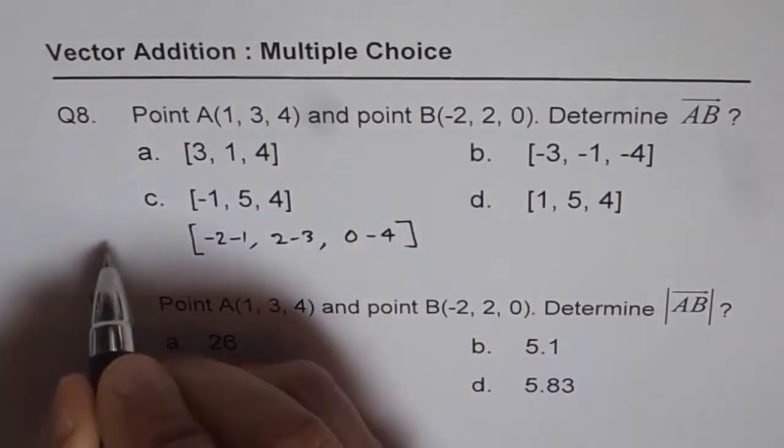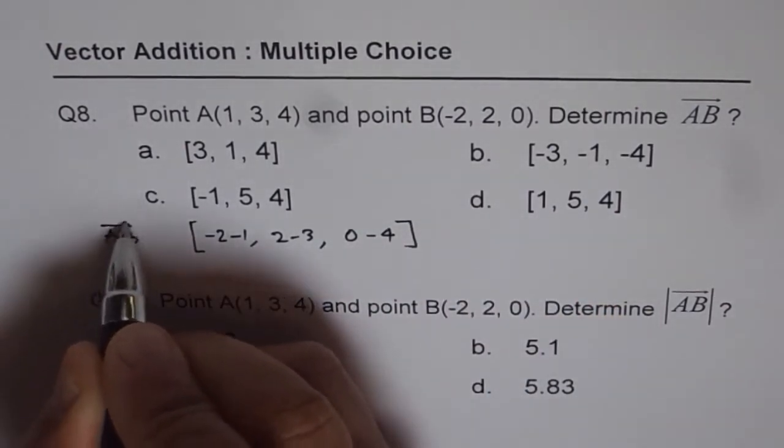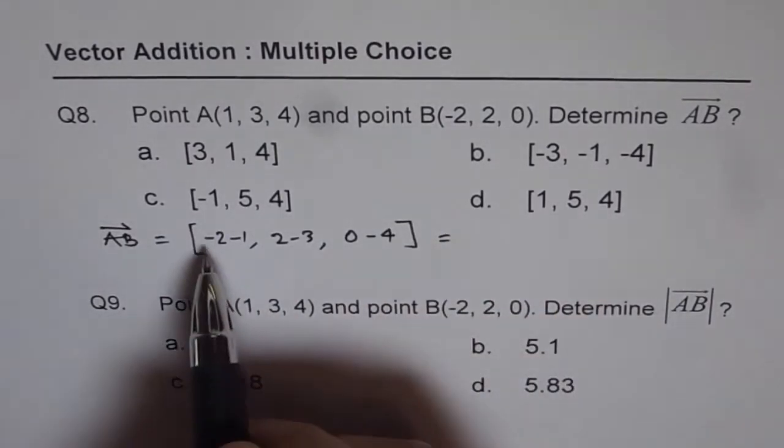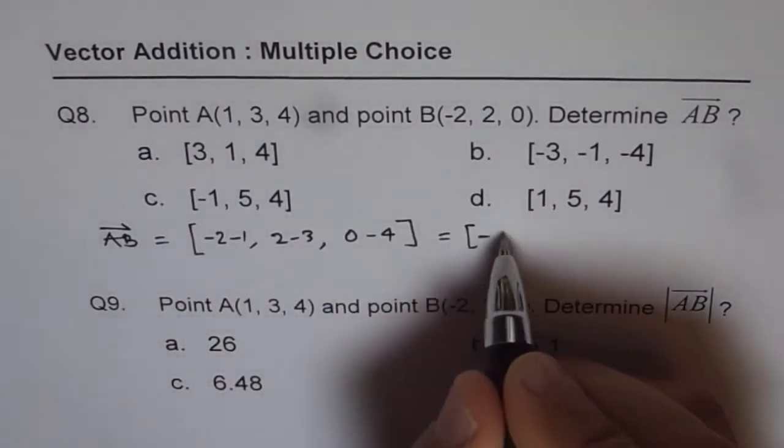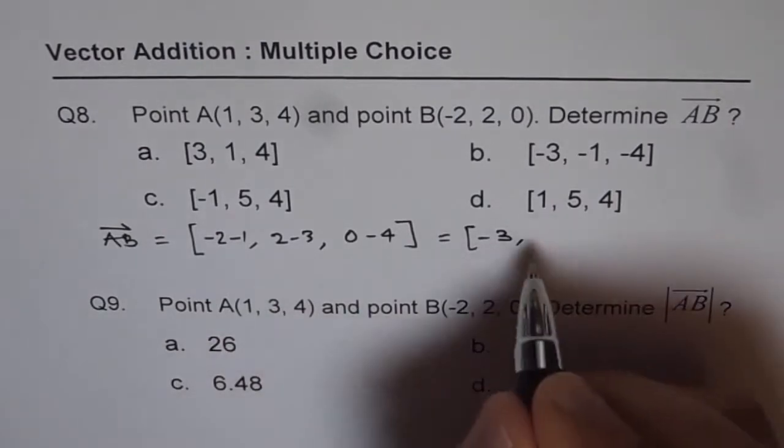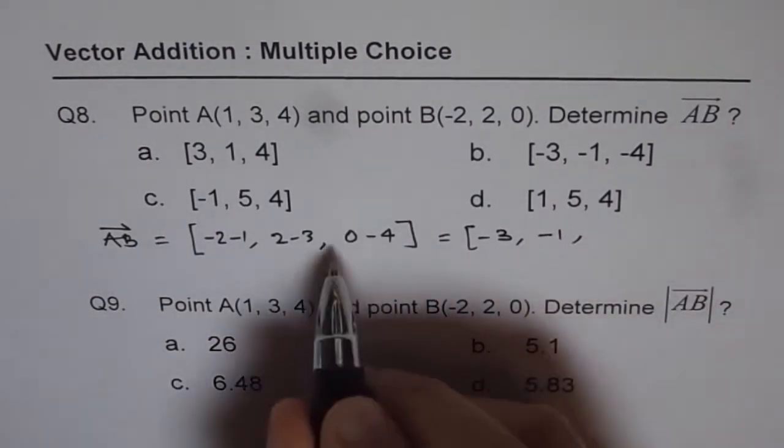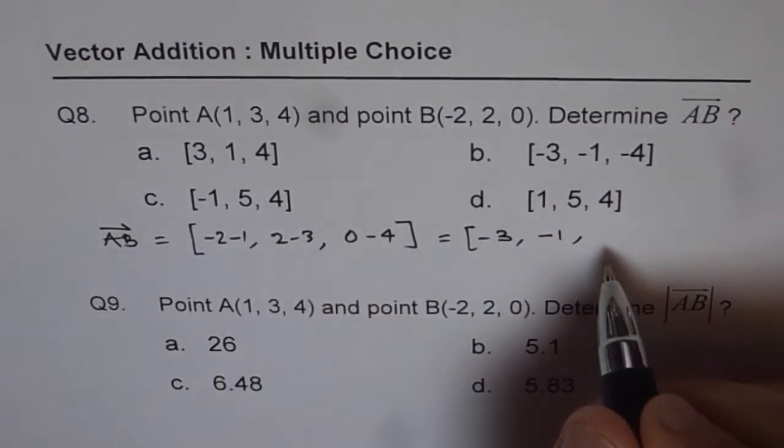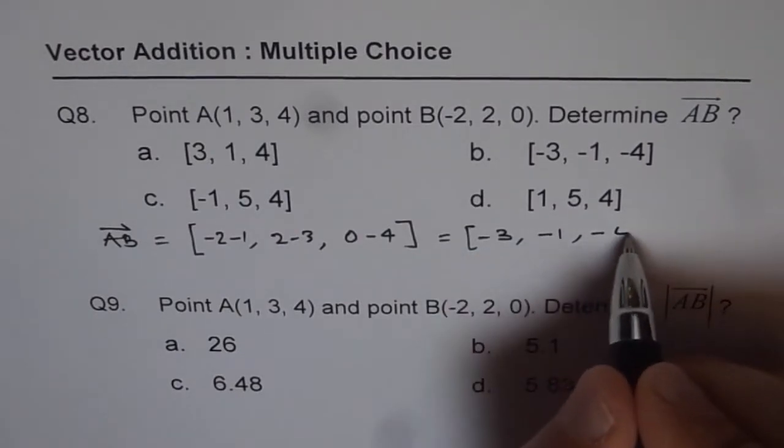That is the vector from A to B. So that is what we get: minus 1 minus 2 is minus 3, 2 minus 3 is minus 1, and 0 minus 4 is minus 4.